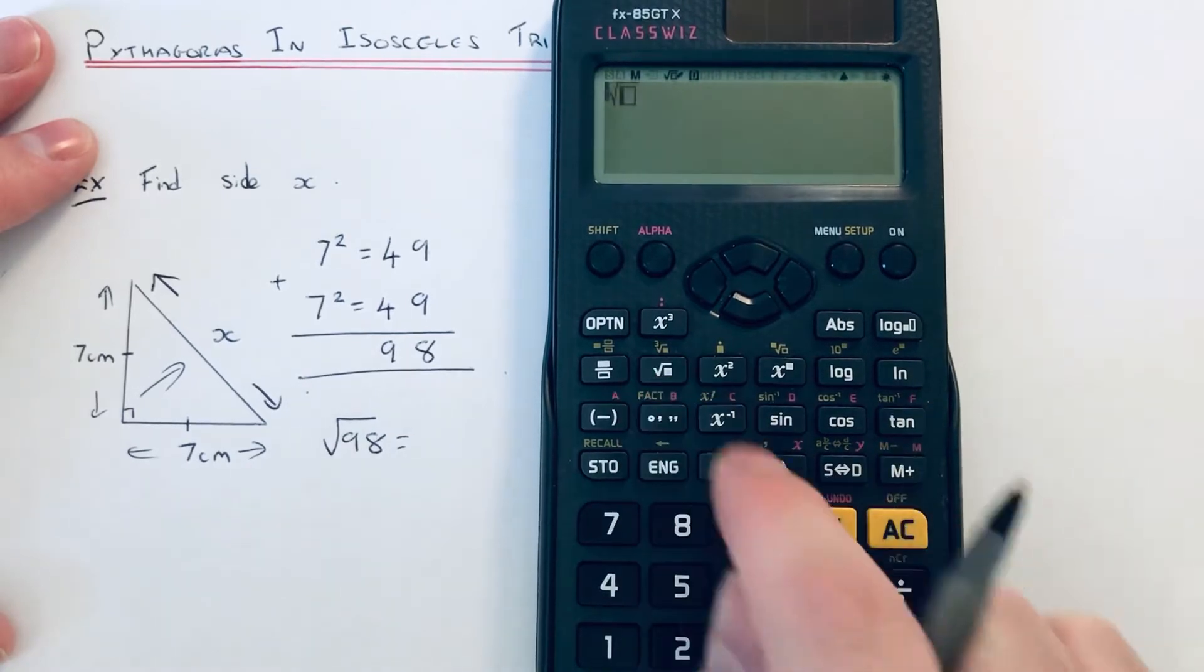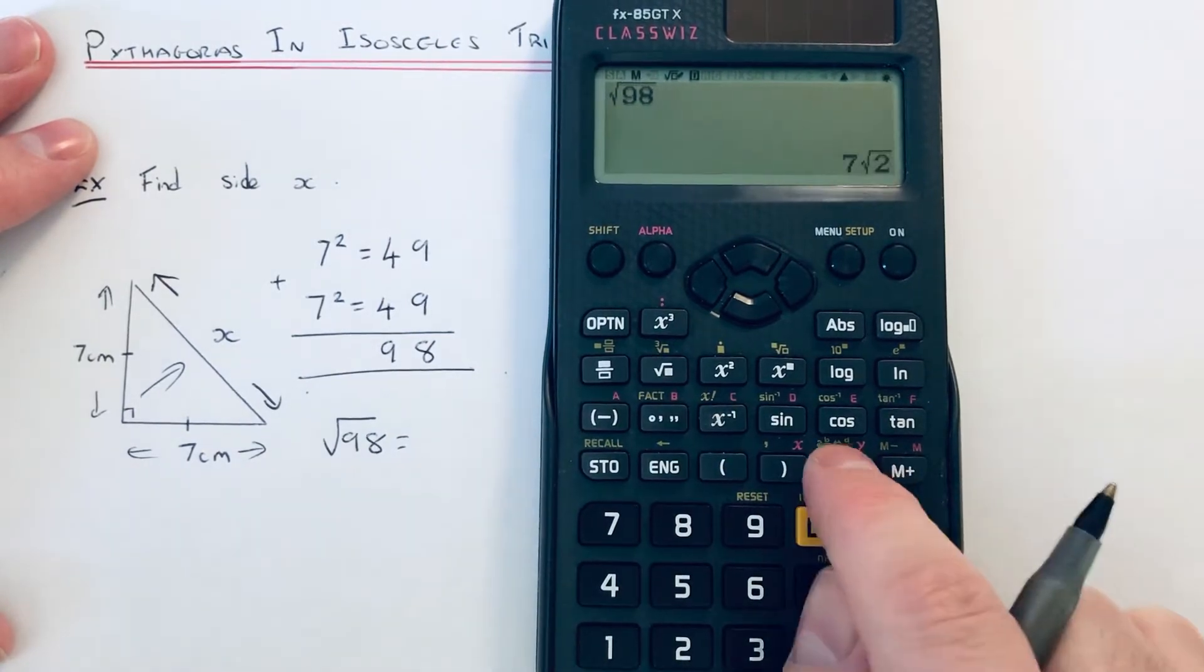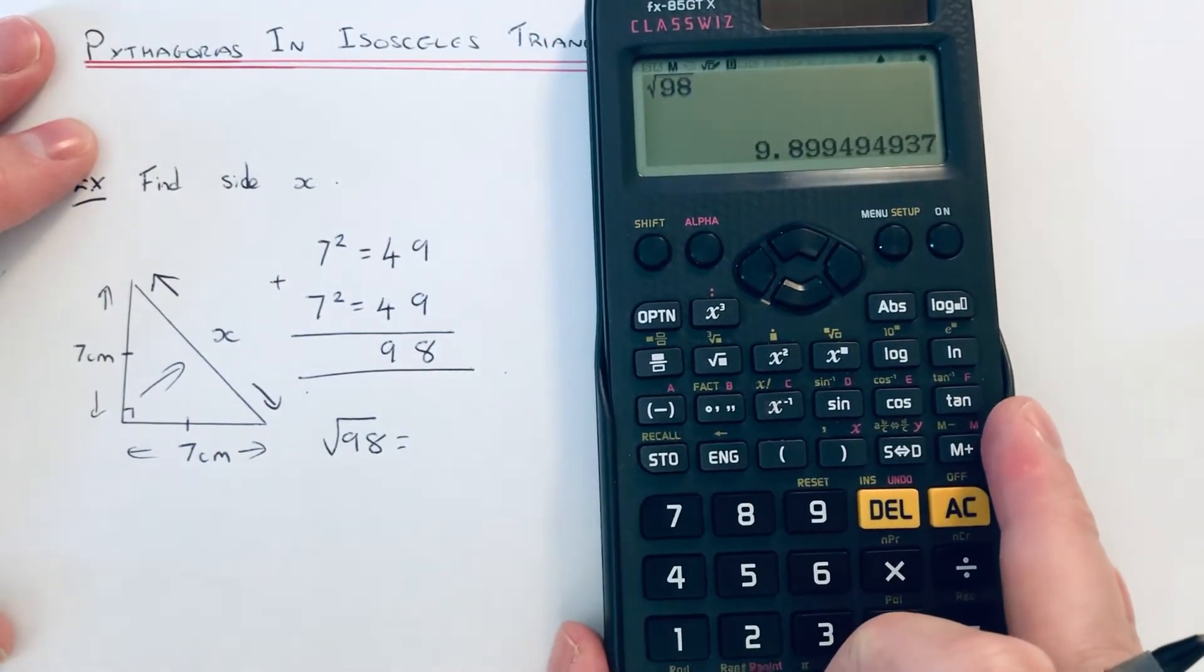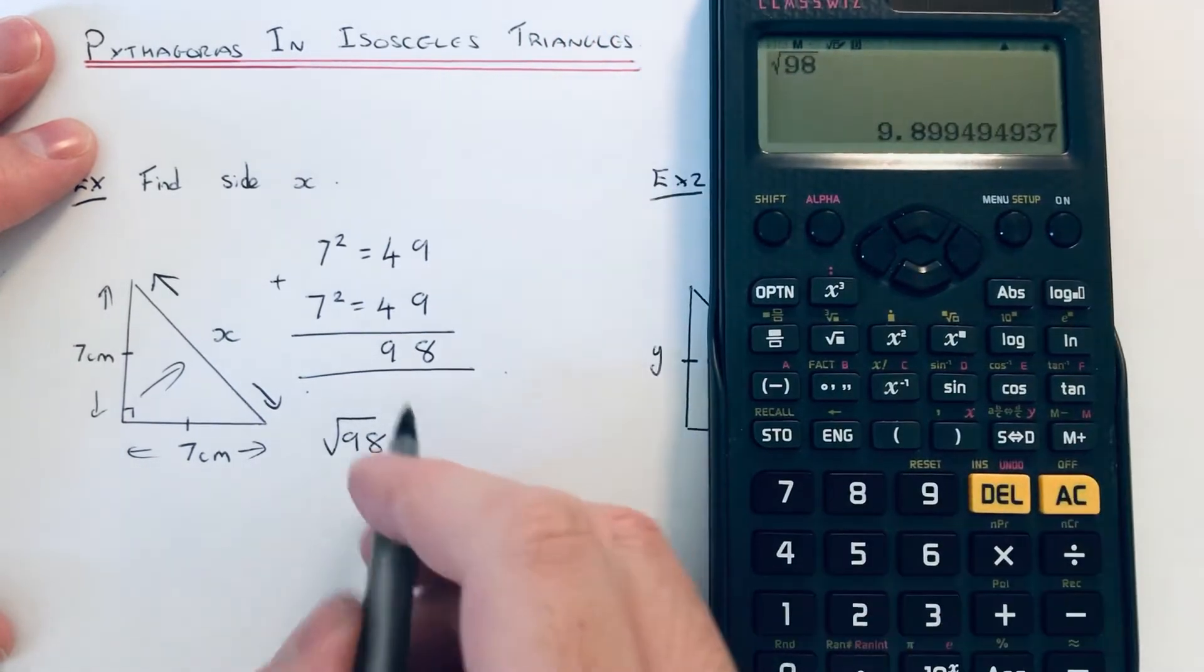The square root of 98 is 9.9 to one decimal place.